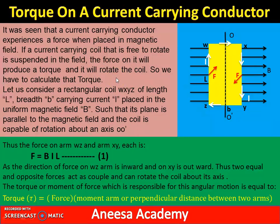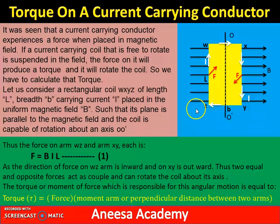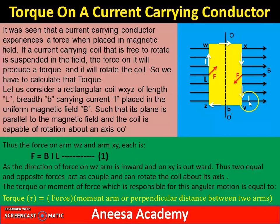First of all, we consider a current-carrying conductor or coil. Let us consider a rectangular coil W, X, Y, Z, having length L. The coil carries current I and is placed in a uniform magnetic field.